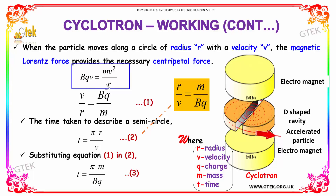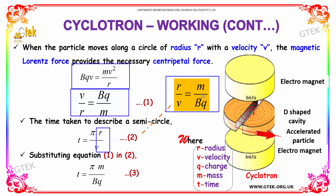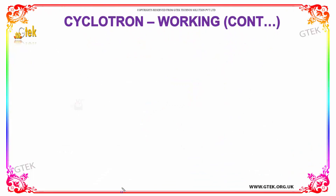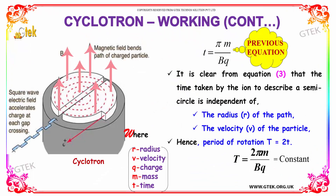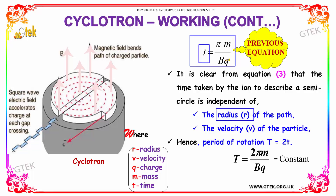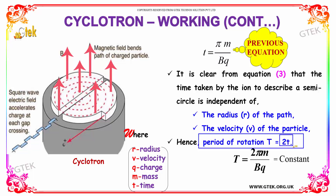From this, V/R = BQ/M, and reversing it, R/V = M/BQ. The time taken to describe a semicircle is T = πR/V, where R/V = M/BQ. Substituting, T = πM/(BQ). It is clear from the equation that the time T is independent of radius R and velocity V. The period of full rotation is T_total = 2πM/(BQ), which is a constant.